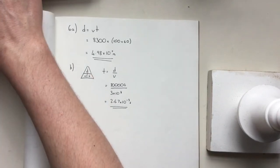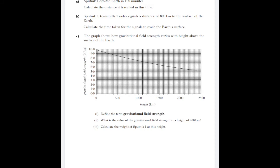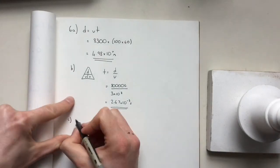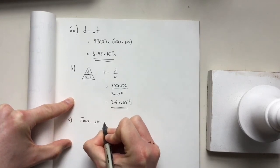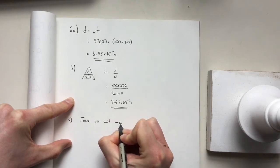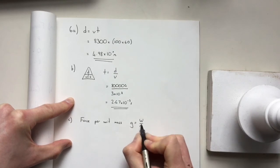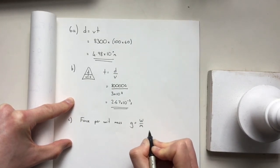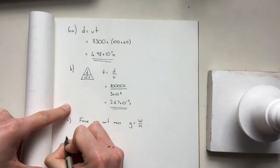Moving on to C. Define the term gravitational field strength. Gravitational field strength is simply the force per unit mass, or G equals W over M. So force per unit mass. These equations are here to help you. Nice and easy answer there.